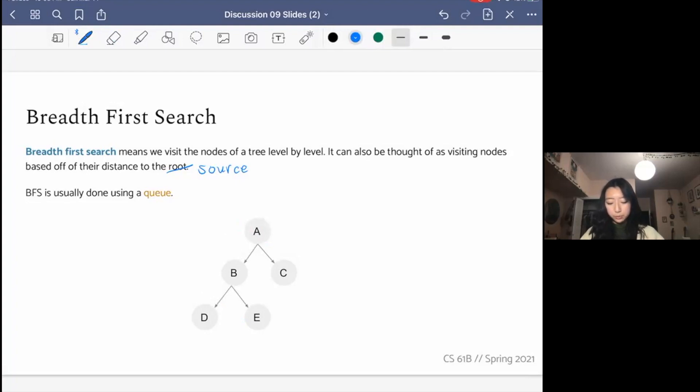Breadth-first search allows us to start here and then traverse the whole tree. In this example, breadth-first search would take us level by level, which means we'd go to A first, then we'd go to the next level in our tree. So we'd look at B and C. Then we'd look at the next level and look at D and E.